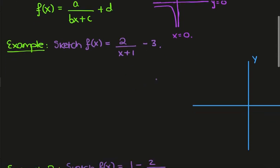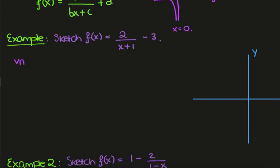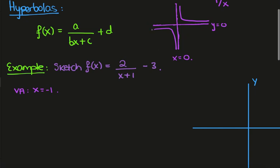Let's have a look at some concrete examples. Let's sketch f of x is equal to 2 over x plus 1 minus 3. The first thing to note is that the vertical asymptote occurs when the denominator is 0, so the vertical asymptote is at x equals minus 1. The horizontal asymptote is given by the d factor, which is the vertical translation, so the horizontal asymptote will be at y equals minus 3.